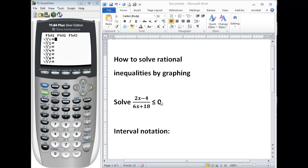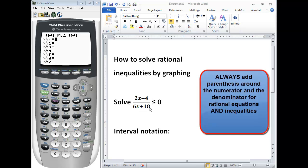We're going to leave the inequality for later. The key to entering in rational expressions or equations into our calculator is we must make sure that the calculator knows 2x minus 4 is in the numerator and 6x plus 18 is in our denominator. The way we indicate that is by making sure to add parentheses around our numerator and parentheses around our denominator.